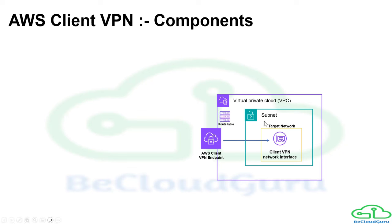Before we move further — when we associate a target network, this network has subnets. You can associate a single subnet or multiple subnets, but these multiple subnets must be part of the same VPC; they cannot belong to different VPCs. Also, they should be from different availability zones.